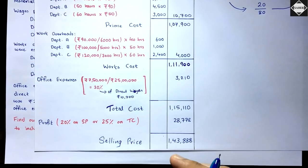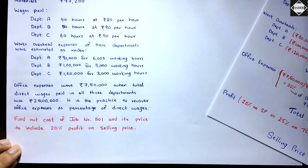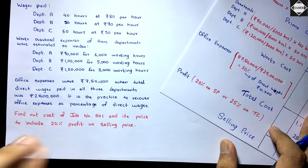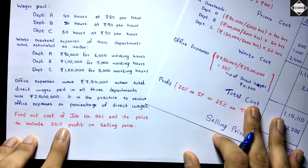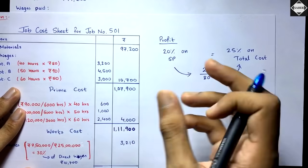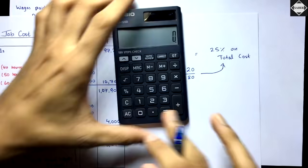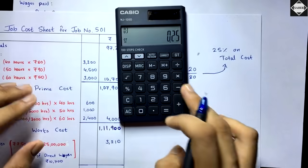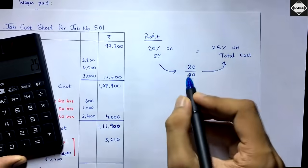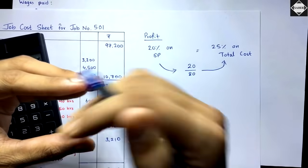Now we calculate the selling price. The question says 20% profit on selling price. We have the cost but not the selling price, so we convert: 20% on selling price → cost price percentage. Since selling price is higher, we go back from SP to cost: 20 ÷ (100 − 20) = 20 ÷ 80 = 25%. So the profit is 25% on cost price.